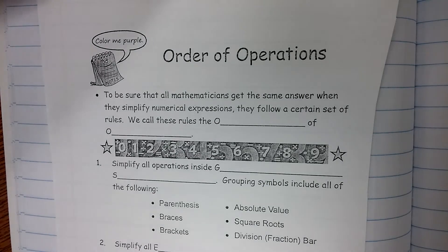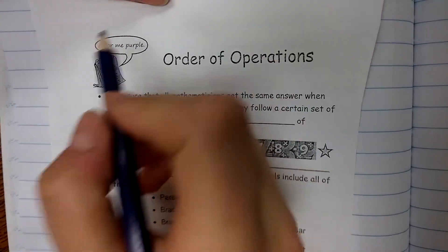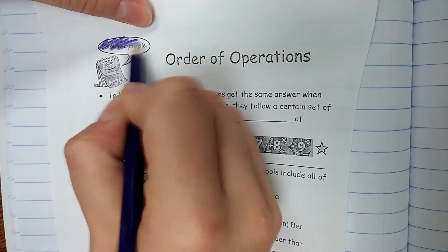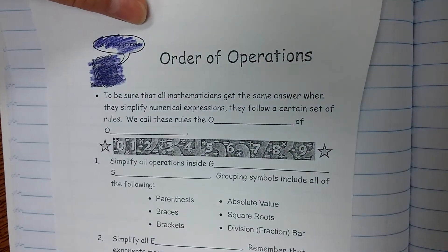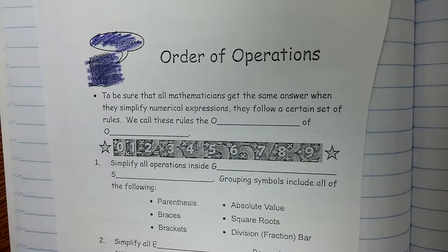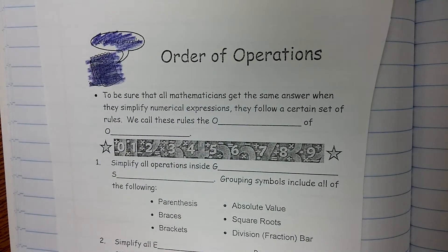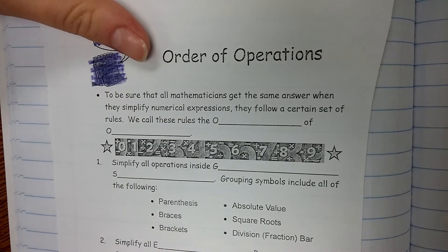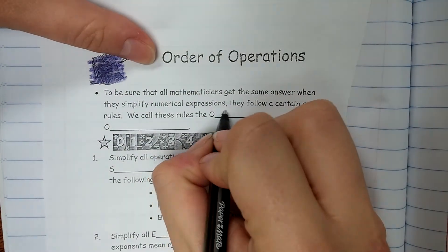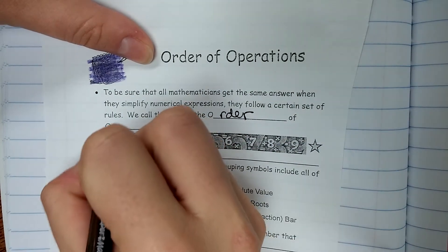In this video we're going to talk about order of operations. We're still in unit one, so this is a purple topic. To be sure that all mathematicians get the same answer when they simplify numerical expressions, they follow a certain set of rules. We call these rules the order of operations.